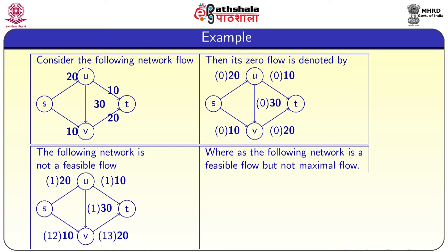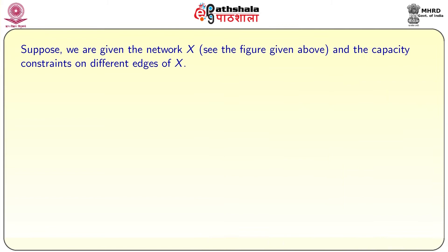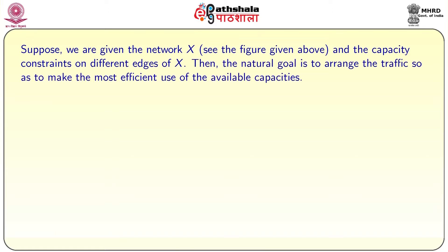In the fourth diagram, the network is a feasible flow but not a maximal flow. Why is it not a maximal flow? The flow going out of s is 8 and the flow reaching t is also 8, but we can give more flow than this diagram shows. Suppose we are given the network X with capacity constraints on the different edges; the natural goal is to arrange the traffic so as to make most efficient use of available capacities.